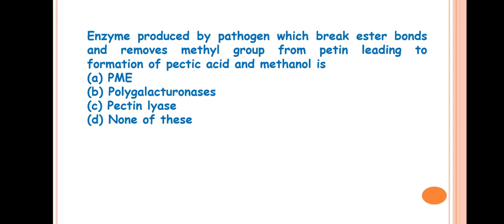First question is: Enzyme produced by pathogen which breaks ester bonds and removes methyl group from pectin leading to formation of pectic acid and methanol is? The answer is PME or pectin methyl esterase.